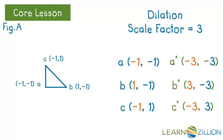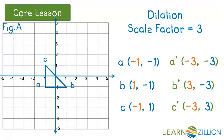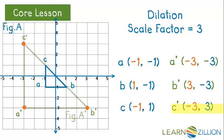Let's take a look at the image on the graph. Plotting the points: A prime is (−3, −3), B prime is (3, −3), and C prime is (−3, 3). Once again, we can see the image is the same shape but a different size than the pre-image, so we can say it is similar to, but not congruent to, the pre-image.